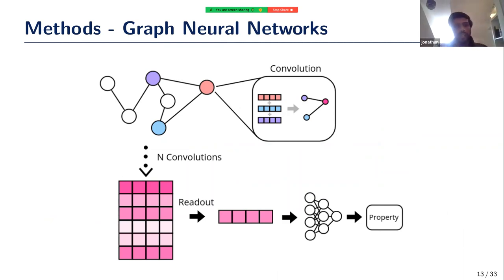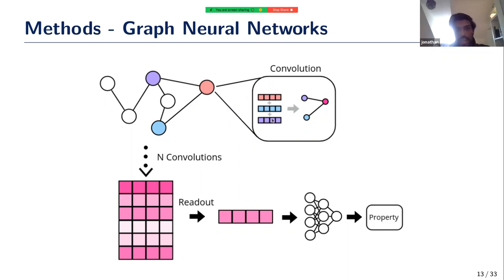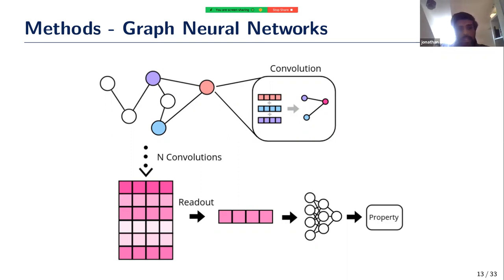To understand how our graph representation is utilized, it helps to understand how graph neural networks work. We're using a graph convolutional network, which performs a series of convolutions. For each node, the convolution takes that node's neighboring features, does something with them — in this case a simple addition — and updates the node's embedding. This is done for every node in the graph, constituting one convolution, typically repeated multiple times. Over successive convolutions, information from more distant nodes traverses the graph and gets incorporated into each node's embedding.